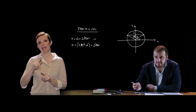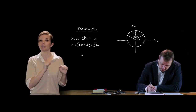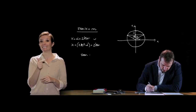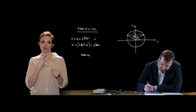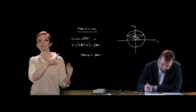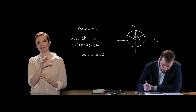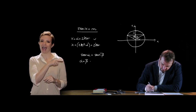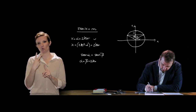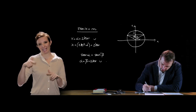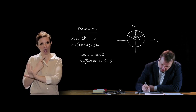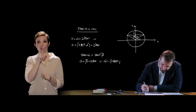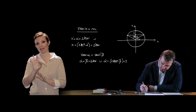Possiamo anche risolvere equazioni trigonometriche in seno caratterizzate da sen α = sen β. Questa è vera quando α = β + 2kπ, unito ad α = 180° − β + 2kπ.